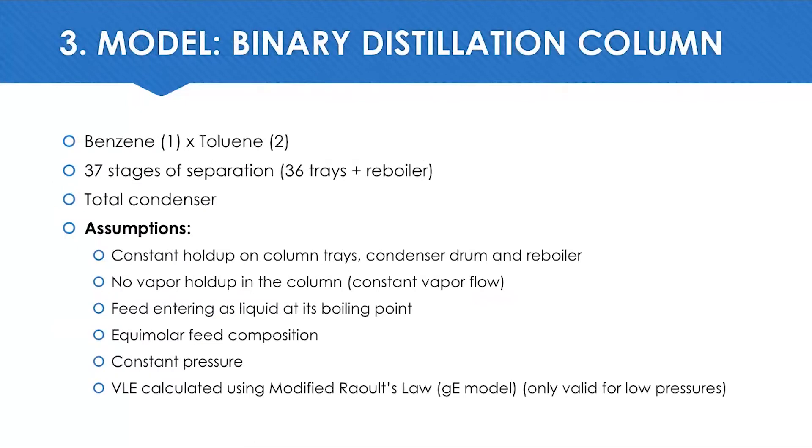The model is based on the distillation of a mixture of benzene and toluene with 37 stages of separation, with a total condenser. And the following assumptions were made: constant liquid holdup on the entire system, no vapor holdup in the column, feed entering as a liquid at its boiling point, equimolar feed composition, constant pressure, and vapor-liquid equilibrium is calculated using modified Raoult's law, which is only valid for low pressures.